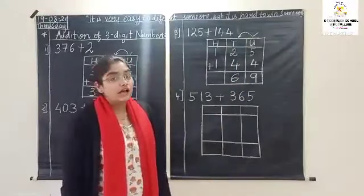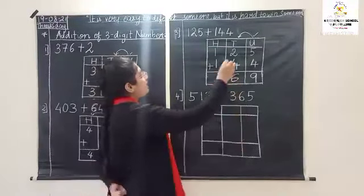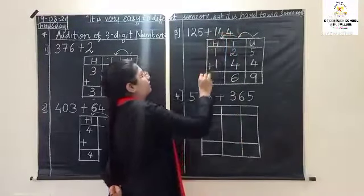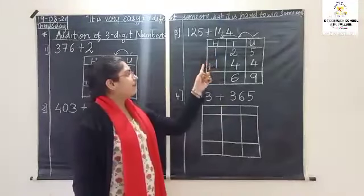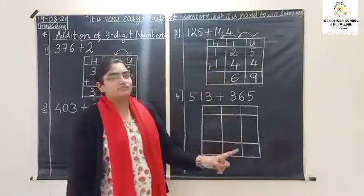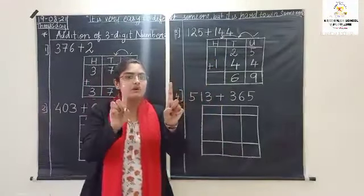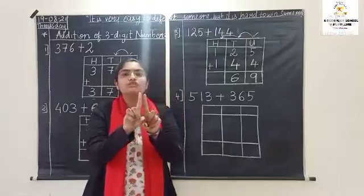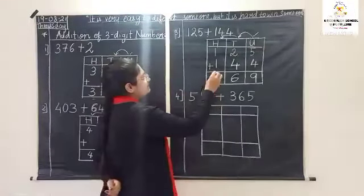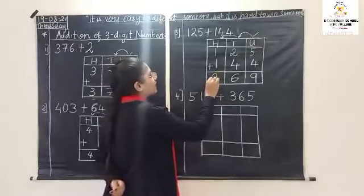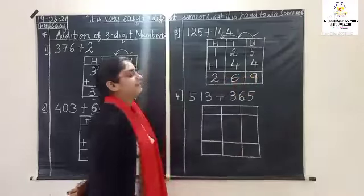Now come to hundreds place: one plus one is equal to two. So the answer is two hundred and sixty-nine.